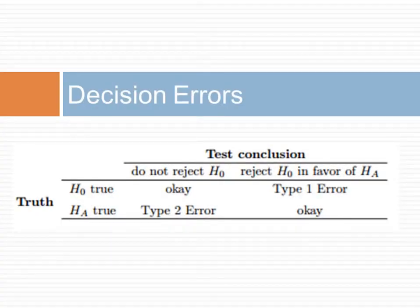Hypothesis tests are not flawless. We can make a wrong decision in statistical hypothesis tests. We can quantify how often we make such errors. We organize our test of a hypothesis in ways that minimize the probability of errors.